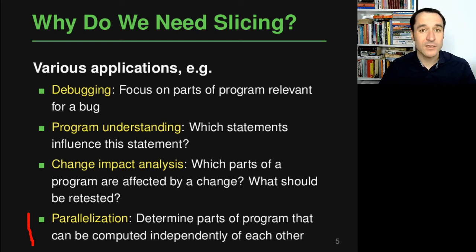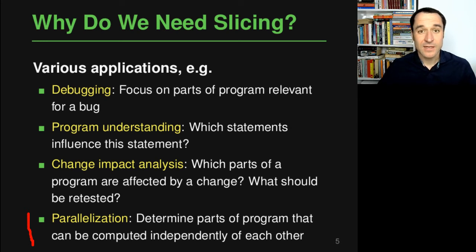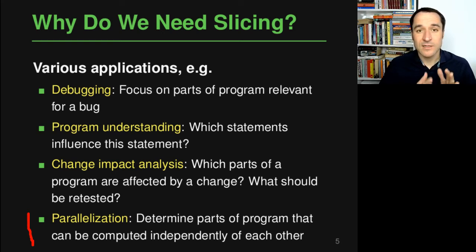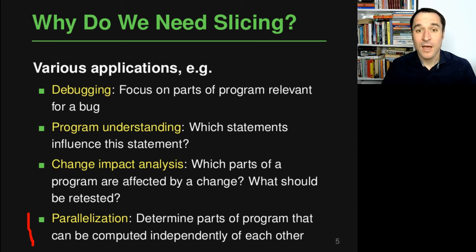Finally, a fourth application of slicing is in parallelization. If you have a sequential program that you would like to run in parallel to speed up execution, you need some way to determine which parts can be computed independently of each other. Because slicing tells you about the dependencies of different statements, it can help you compute individual slices that are independent of each other, and then you can run these slices in parallel. There are actually many more applications that all rely on this fundamental technique of slicing.